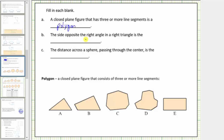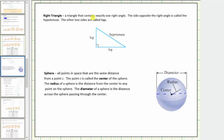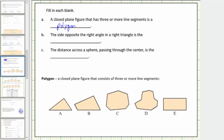For B, the side opposite the right angle in a right triangle is the blank. Looking back at our notes about a right triangle, a right triangle is a triangle that contains exactly one right angle. The side opposite the right angle is called the hypotenuse; the other two sides are called legs. The legs are the two sides that form the right angle, and the hypotenuse is opposite the right angle — it's also the longest side. So for B, the side opposite the right angle in a right triangle is the hypotenuse.